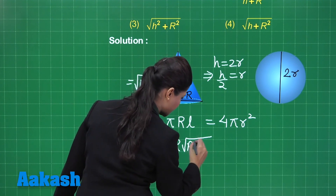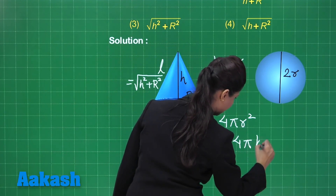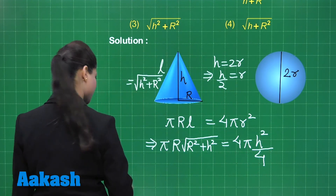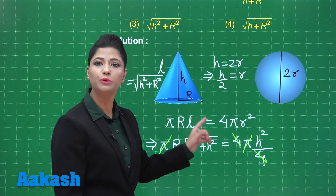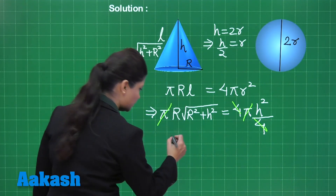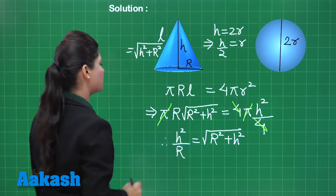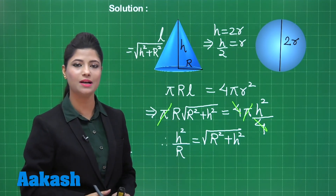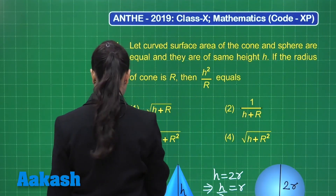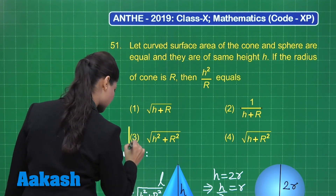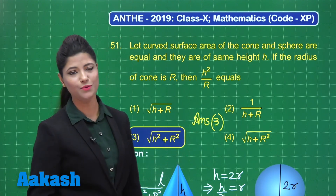Substituting: πR√(R² + h²) = 4π(h/2)² = 4π(h²/4) = πh². Cancelling π and simplifying: R√(R² + h²) = h², so h² upon R = √(R² + h²). This is the required result. Therefore h² upon R equals √(h² + R²), which is option number 3.